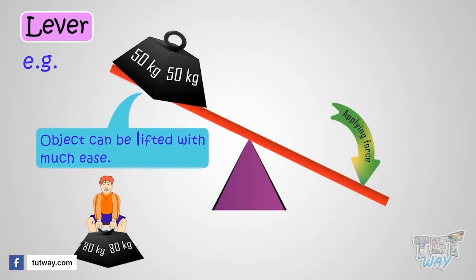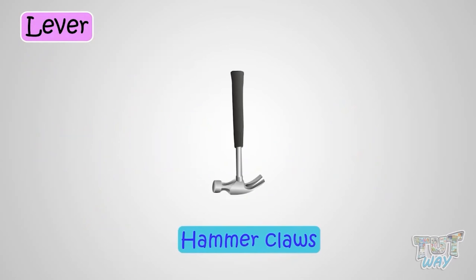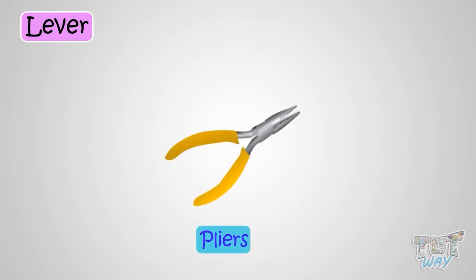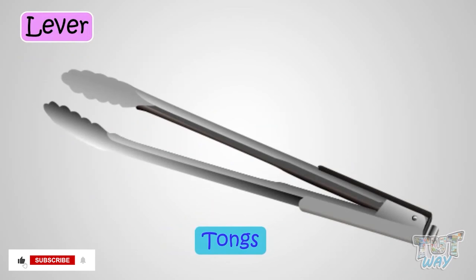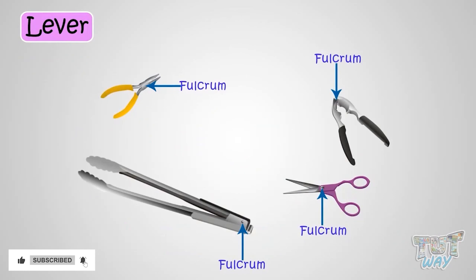Let's see a few things that use the concept of a lever for their working: scissors, hammer claws, pliers, nutcrackers, tongs. All these things are based on the principle of a lever.